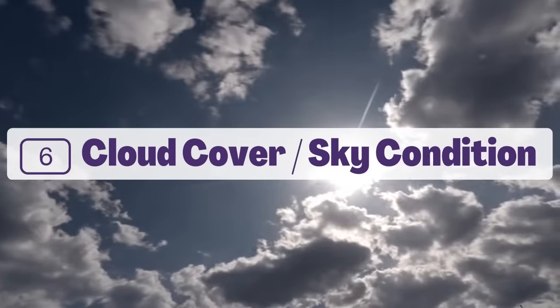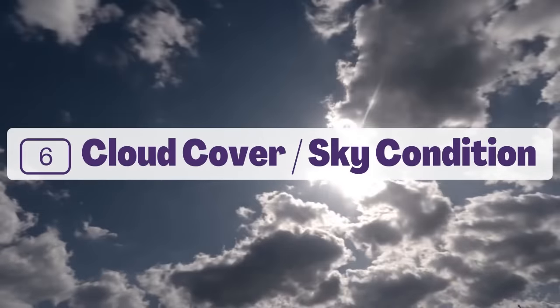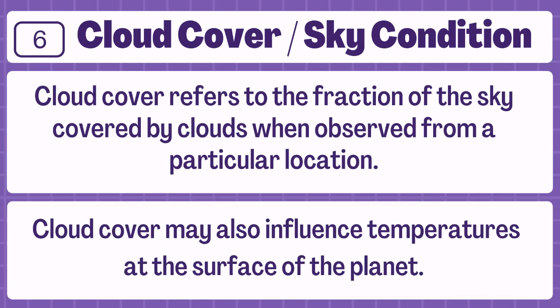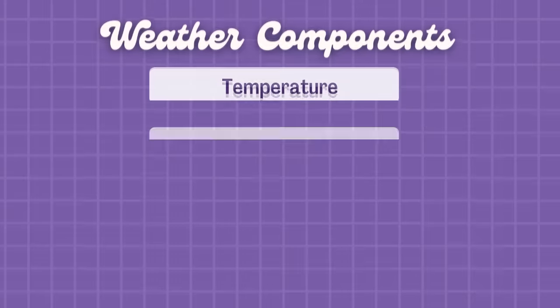Number six: cloud cover or sky condition. Cloud cover refers to the fraction of the sky covered by clouds when observed from a particular location. Cloud cover may also influence temperatures at the surface of the planet.